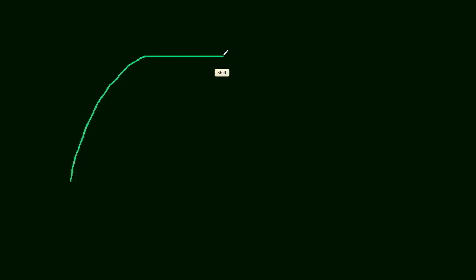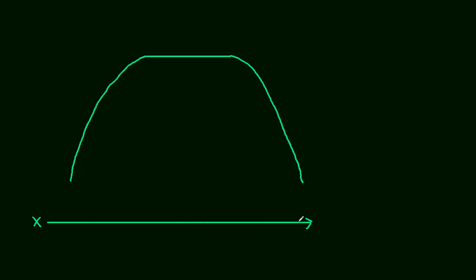One way we can use the derivative is to determine whether a function is increasing, which means it's moving up; whether it's constant, which means it's horizontal — not moving up or down; or if it's decreasing. When x moves from left to right, if the function is moving up it's increasing, if it's moving down it's decreasing, and if it's not moving up or down then it's constant.